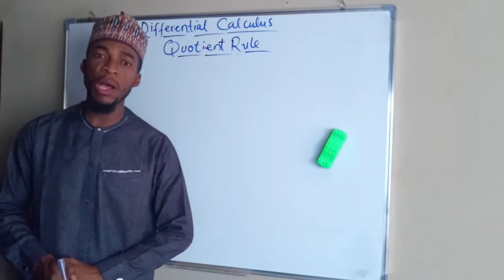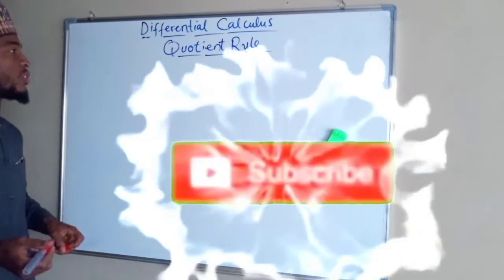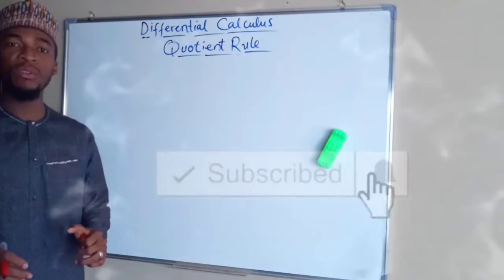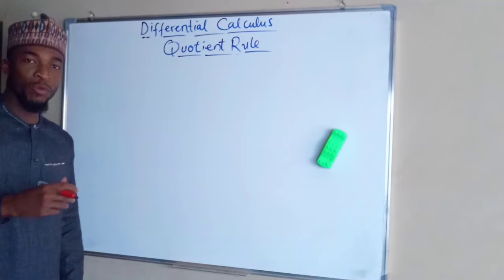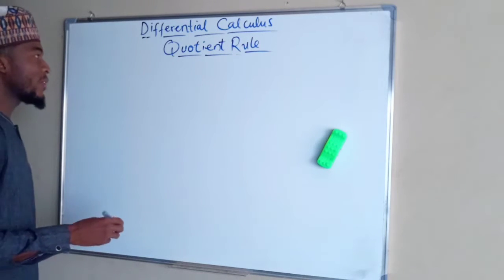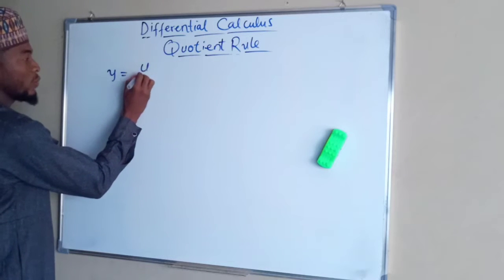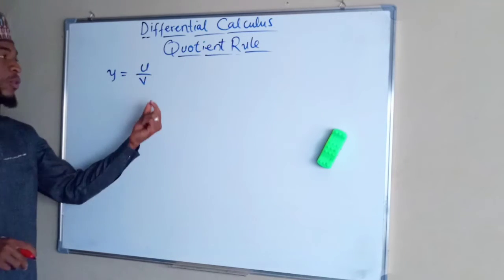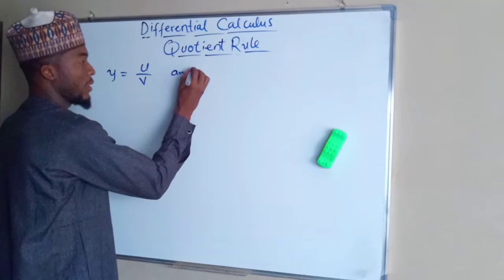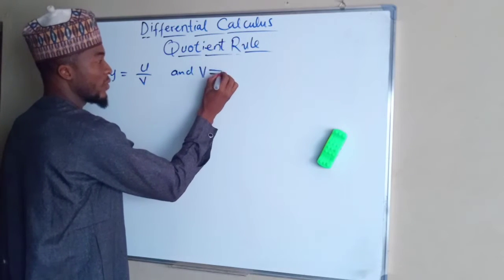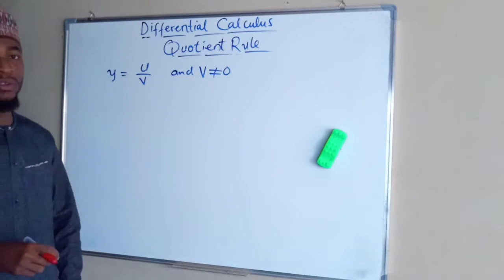Still on differential calculus, today I'll be talking about the quotient rule. The quotient rule is only applicable to a function in the form of a fraction — either a proper fraction or improper fraction. Suppose y equals u divided by v, where u and v are also functions of x, and v is not equal to zero, because if v equals zero the function is undefined.